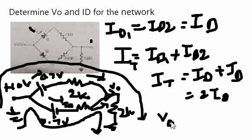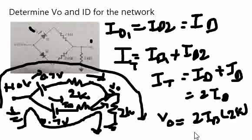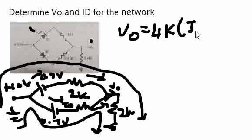Now, V0 is nothing but is equal to I into R, right? 2 into ID into 2K. So which means, 4K ID, that is what we get for V0. Now, again, let us write simple equation here. V0 is equal to 4K into ID. Let's remember this.